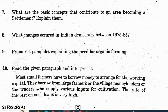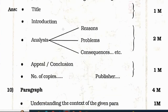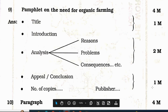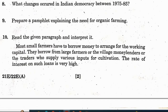Question 9: prepare a pamphlet explaining the need for organic farming. Marking scheme: title and introduction — 1 mark; analysis, reason, problem, consequences — 2 marks; appeal, conclusion, number of copies — 1 mark. Total 4 marks.